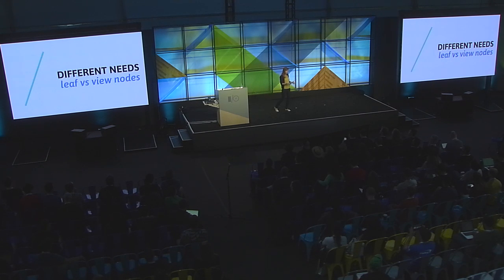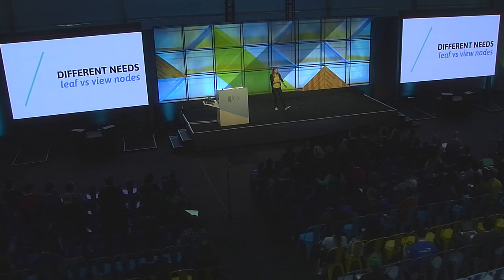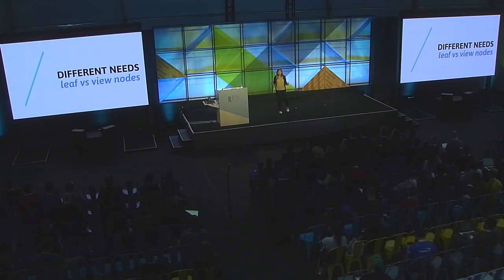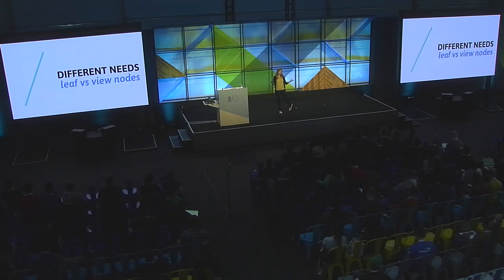This came because we realized there are very different needs when you're building a library based on who your target is. Your needs are very different if you're building a leaf element — something like an input or a button that sits at the bottom and gets used a lot — versus making a giant view node, like the entry point in your application that aggregates all the things. These are very different elements, and you have to think about them very differently, which means the library has to be held very differently in these cases.